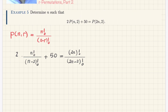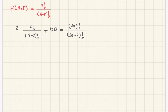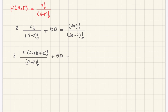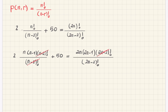I have to simplify this as much as possible. The first thing is the famous property of factorial: in the numerator, instead of n factorial I write n times n minus 1 times n minus 2 factorial. In the denominator I have n minus 2 factorial, so they cancel. On the right-hand side I do the same: I write 2n times 2n minus 1 times 2n minus 2 factorial, divided by the denominator — and those cancel too.